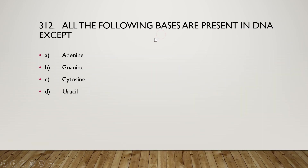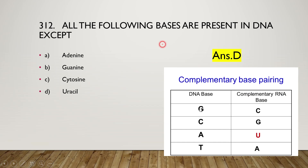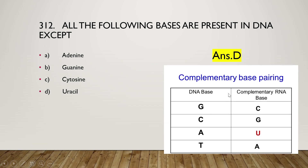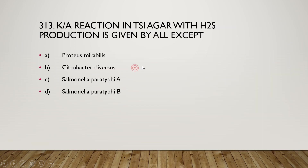The next question: all the following bases are present in DNA except — adenine, guanine, cytosine, or uracil. The right answer is option D — uracil is not present in DNA. In DNA, guanine, cytosine, adenine, and thymine are present. Uracil is only present in RNA.